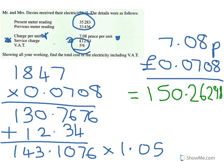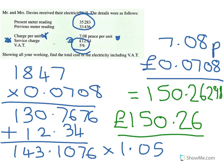But if that's your final answer, you'll lose a mark, because that's obviously not a bill that someone would ever get — it's got too many decimal places. So you need to make sure you round to two decimal places. Your final answer should be £150.26, rounded to two decimal places.